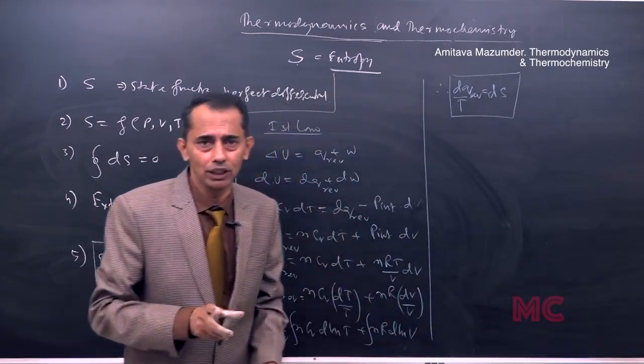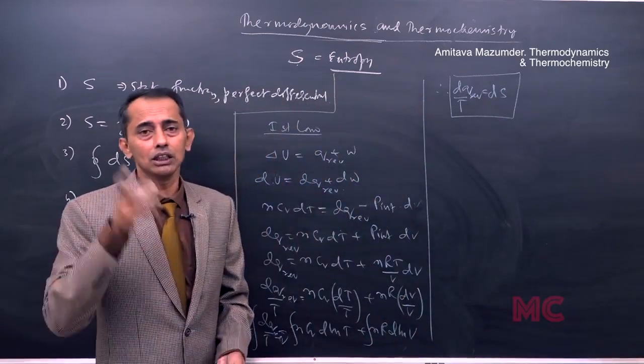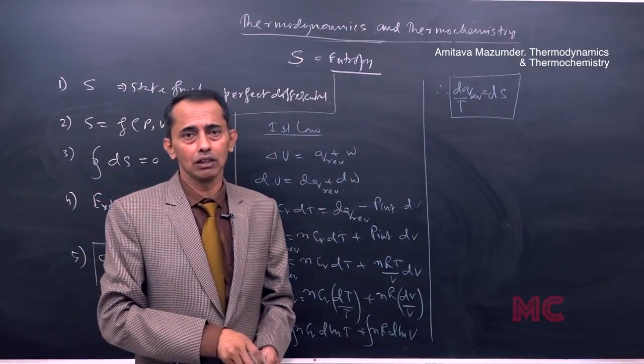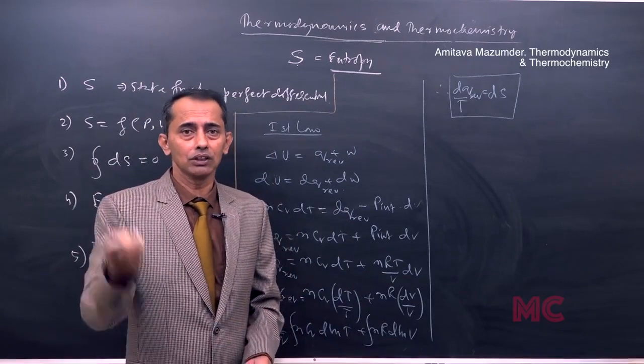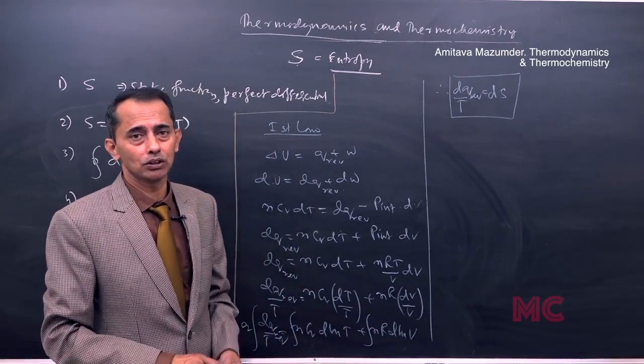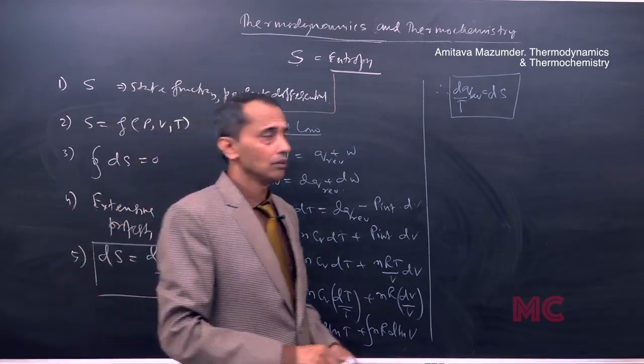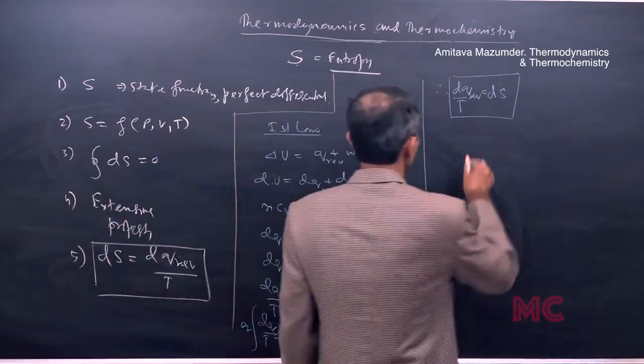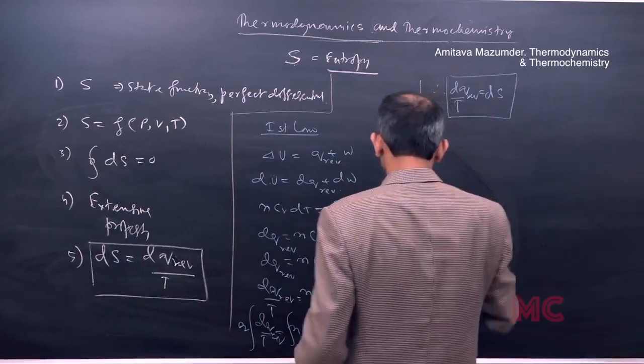Change in entropy is nothing but heat taken at a particular temperature divided by that temperature. The ratio of heat to temperature in Kelvin is the change in entropy: dQ/T equals dS.